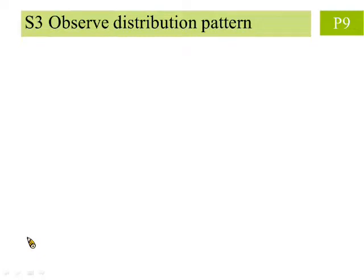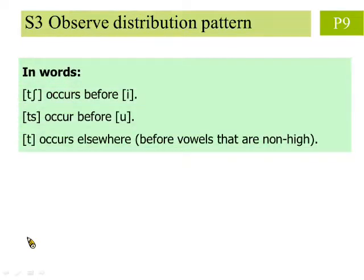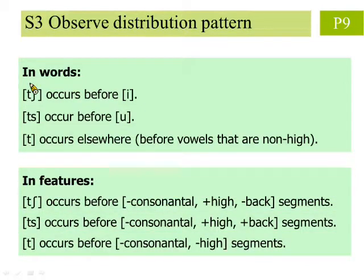Next, if we describe the distribution pattern and environments of the three consonant sounds in words, we get the following: the sound [ch] occurs before [e]; the sound [ts] occurs before [u]; and the sound [t] occurs in all other cases, namely before the other three vowels which are non-high. Recall that [e] and [u] are both high vowels. If we rewrite this in features: [ch] occurs before non-consonantal, high, and non-back vowel segments; [ts] occurs before non-consonantal, high, and back vowel segments; and [t] occurs before non-consonantal and non-high vowel segments.